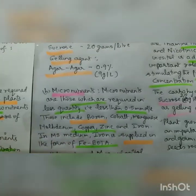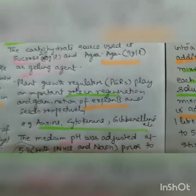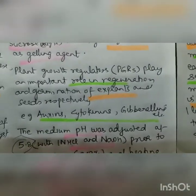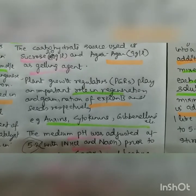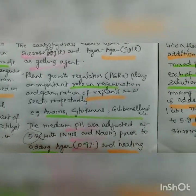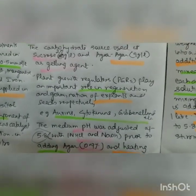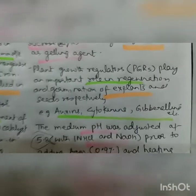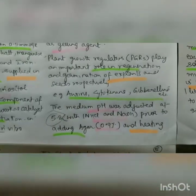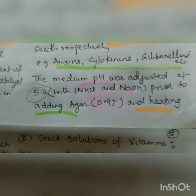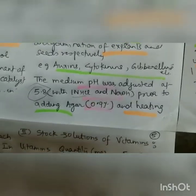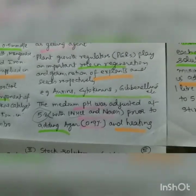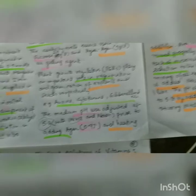Plant growth regulators are not part of the media itself but are added at different times depending on the goal: auxin for rooting, cytokinin for shooting, both in equal concentration for organogenesis, and gibberellin for internodal growth. Medium pH is adjusted to 5.8 prior to adding agar-agar or heating — add NaOH if acidic, add 1N HCl if basic. This completes the basic components, and now we move to media preparation.